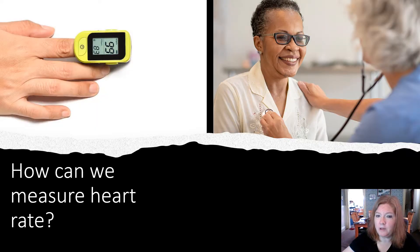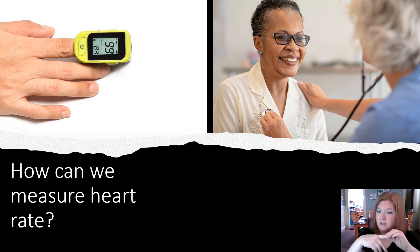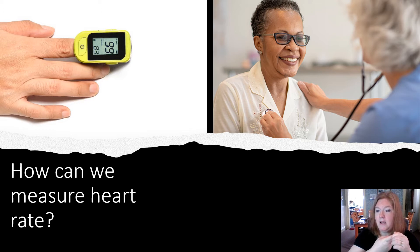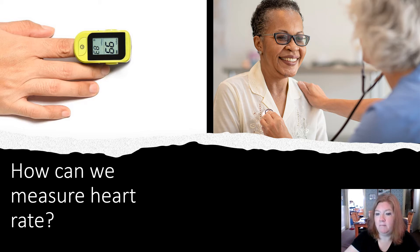How can we measure heart rate? We could use a stethoscope, or a device placed on your finger that measures oxygenation in your blood and also your pulse. It can also be done with a stethoscope when taking blood pressure.